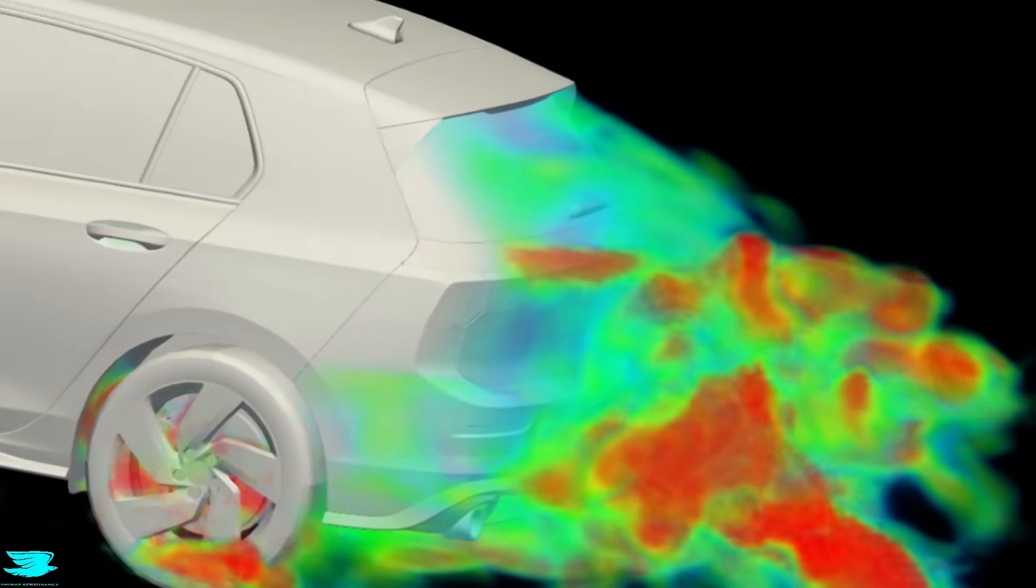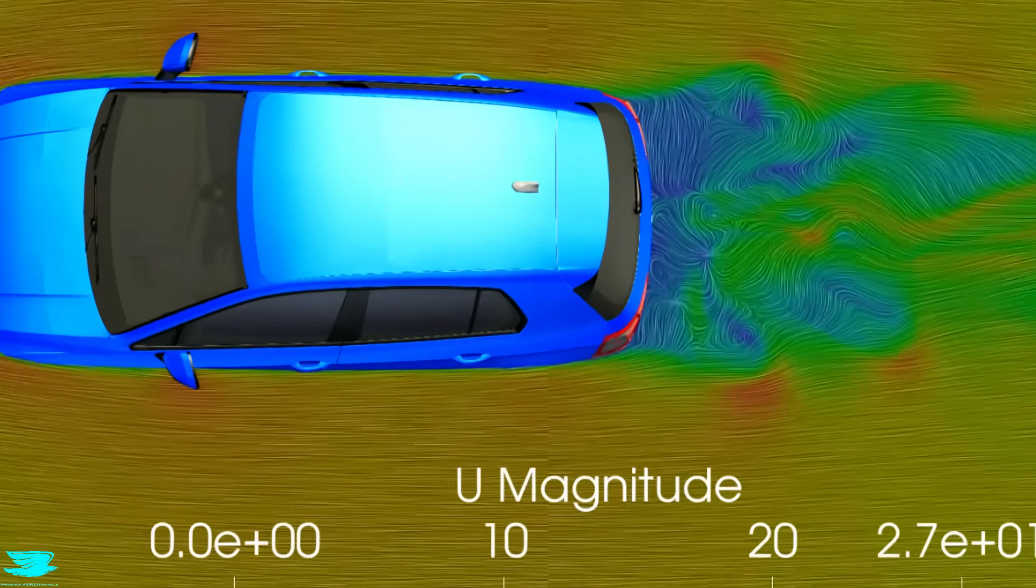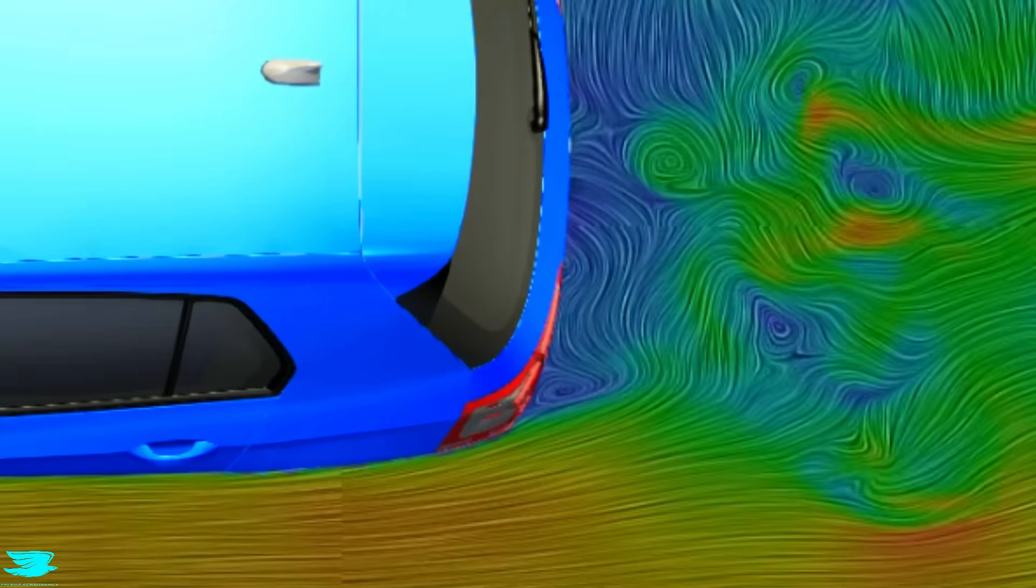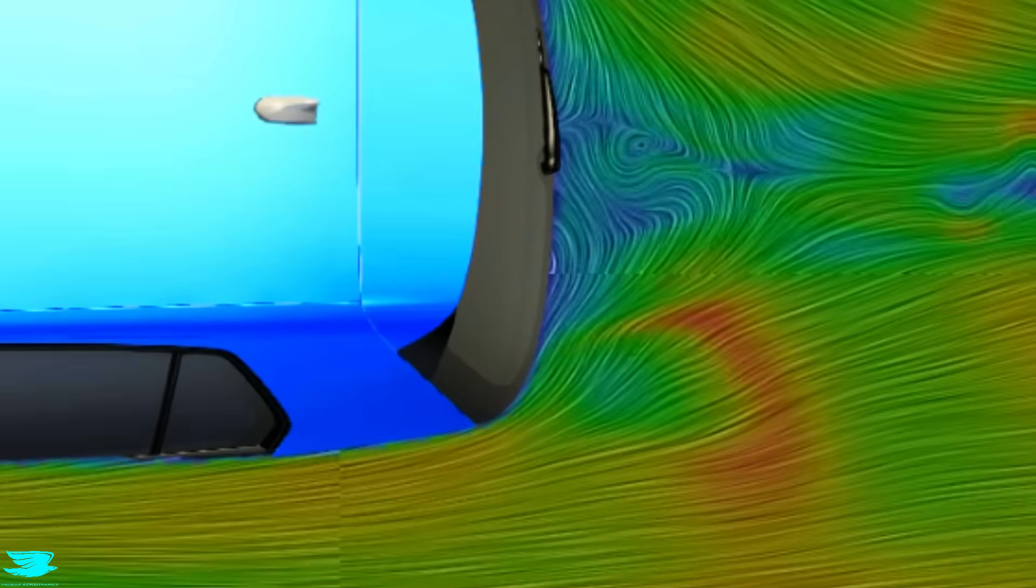And then moving up another 30cm to 80cm off the ground, still here, the wake is pretty bad, unlike higher up where we saw around the cabin, the flow just sucked in and created a much smaller wake. And with that, less drag.